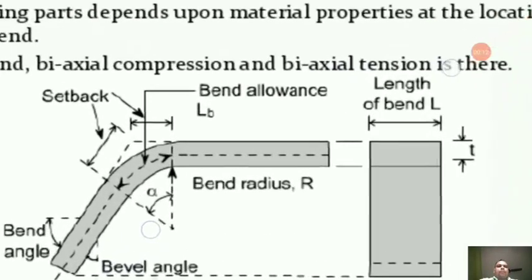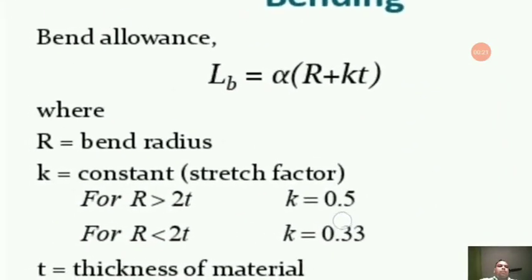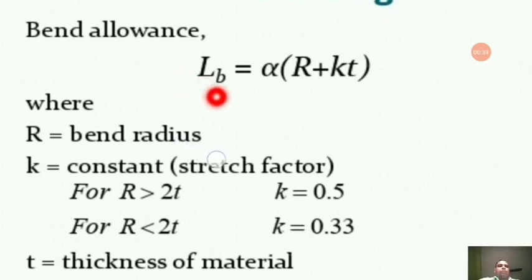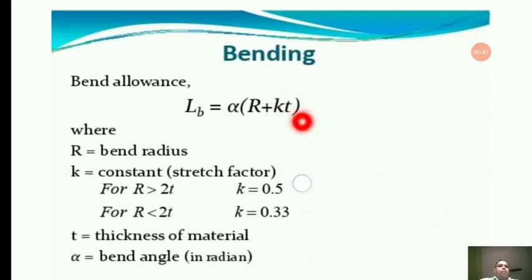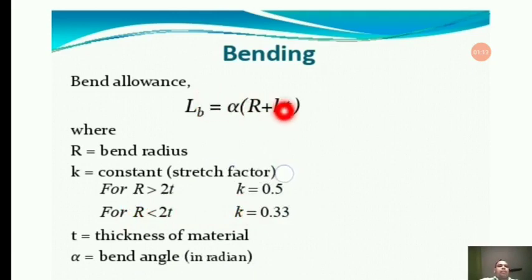In the bend allowance formula LB = α(R + KT): R is the bend radius, α is the bend angle, T is the thickness of the material, and K is the stretch factor or constant. When R is greater than 2T, K = 0.5. When R is less than 2T, K = 0.33. This formula is needed for solving numericals on bending.